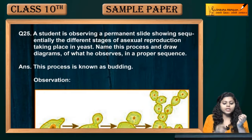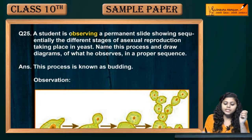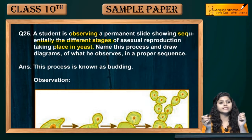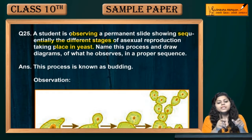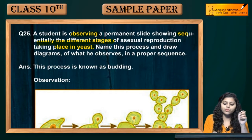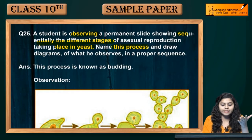Question 25. A student is observing a permanent slide showing sequentially the different stages of asexual reproduction taking place in yeast. We are seeing a permanent slide showing what is in yeast asexual reproduction. Name this process — this asexual reproduction which is in yeast.